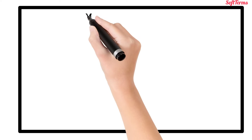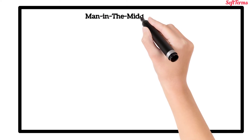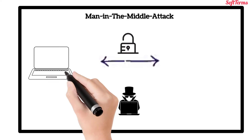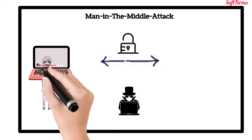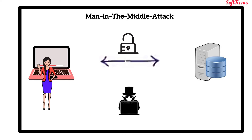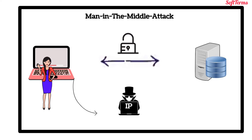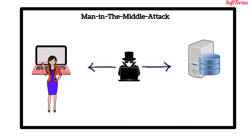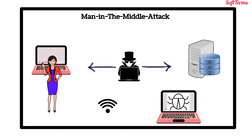Another type of attack is the man-in-the-middle attack. Here, the hackers gain access to the information passed between Sara's device and the website's server. The hacker's computer takes over Sara's IP address. By doing so, the communication line between Sara and the website is secretly intercepted. This commonly happens with unsecure Wi-Fi networks and also through malware.